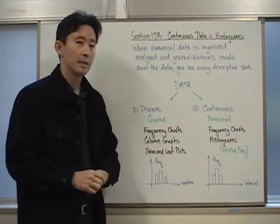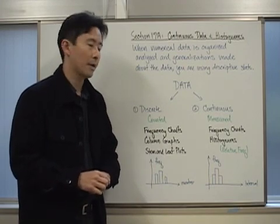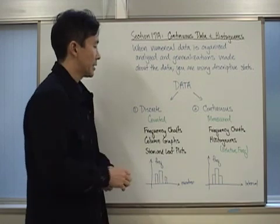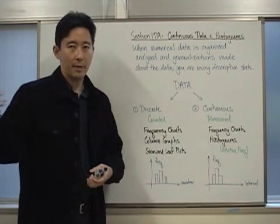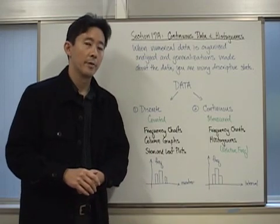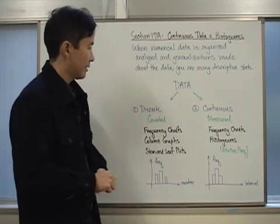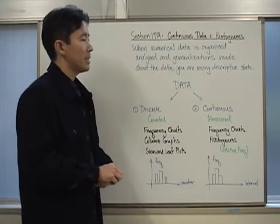For example, in terms of discrete data, it's how many students are in the class, whereas if we talk about continuous data, we can talk about how tall everyone is. The most important thing then that we need to be able to do is we need to be able to organize the data.